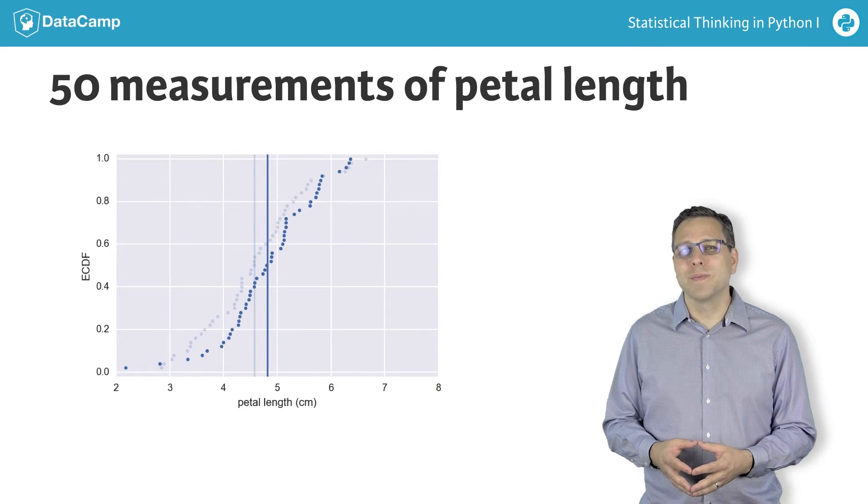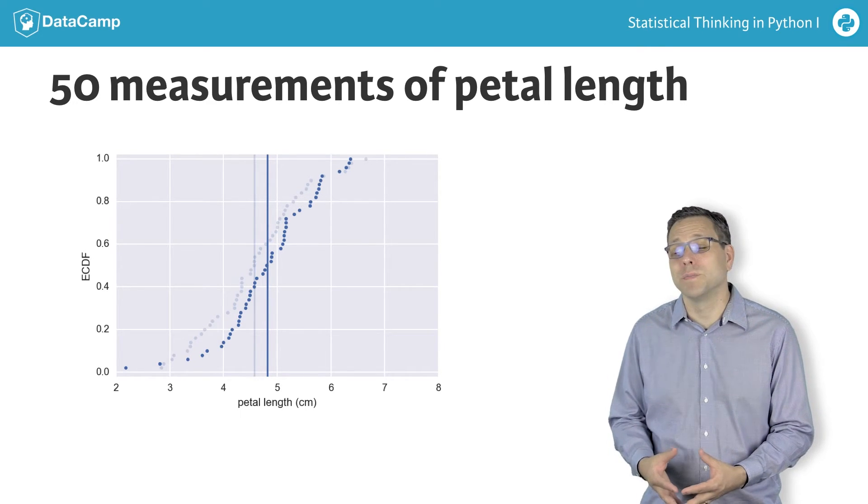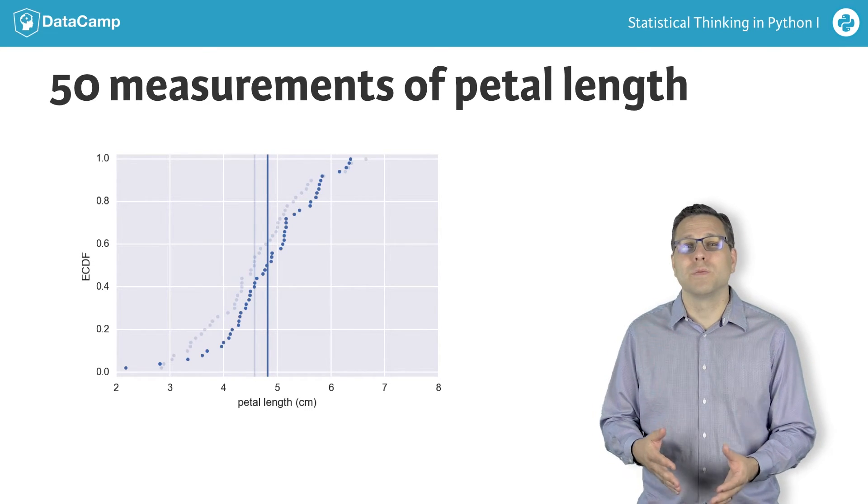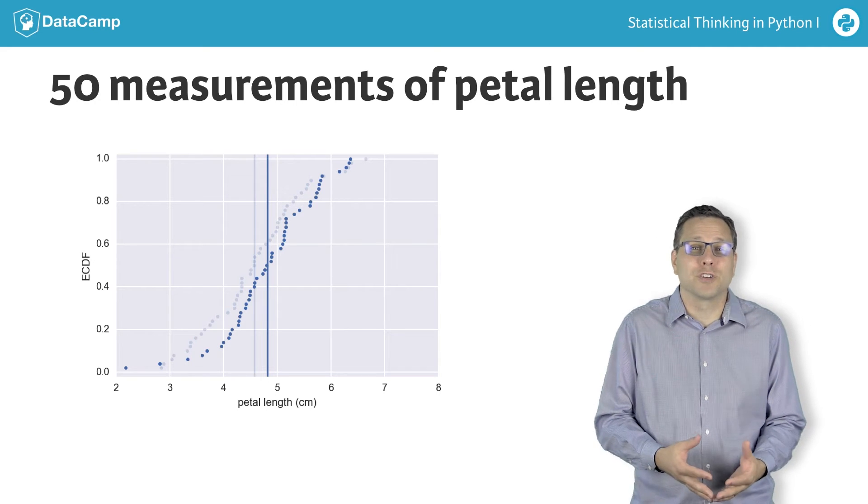Though you can't tell me exactly what the mean of the next 50 petal lengths you measure will be, you could say that it is more probable to be close to what you got in the first 50 measurements than it is to be much greater.